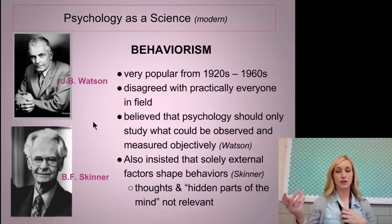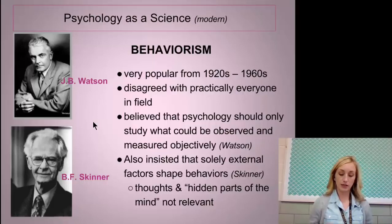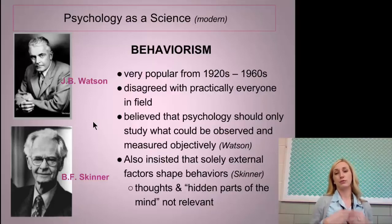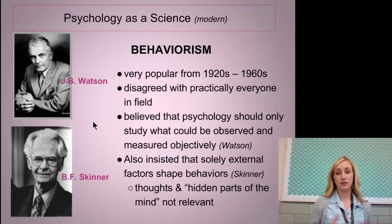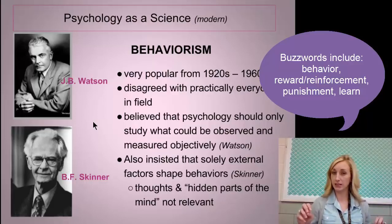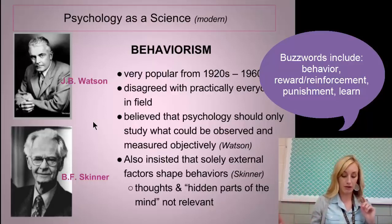Behaviorism is another modern view in psychology, which became very popular in the 1920s through 1960s with J.B. Watson and B.F. Skinner — we'll learn more about them in Unit 6. They disagreed with practically everyone in the field and believed that psychology should only study what can be observed and measured objectively, and that is our behavior. Skinner insisted that solely external factors shape behavior — the hidden parts of our mind like thoughts and the unconscious are irrelevant. All you need to look at is our behavior and what we learn from our environment.